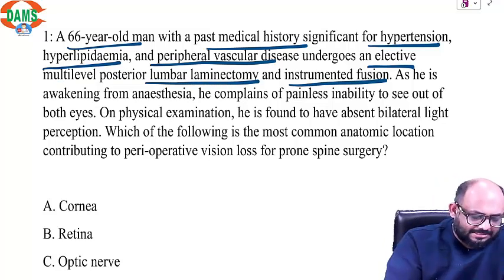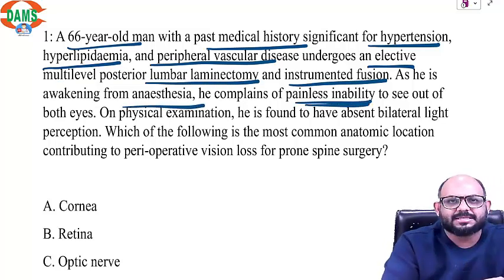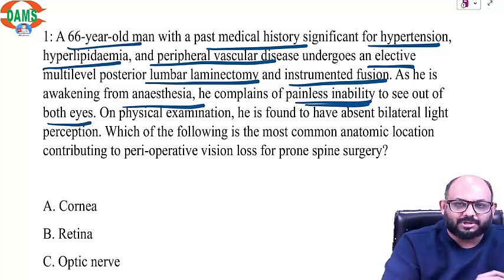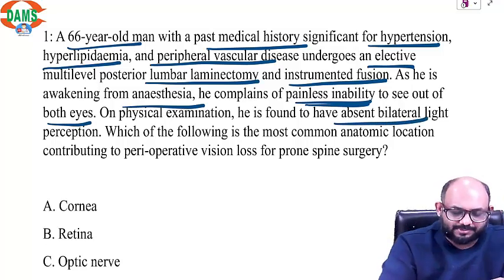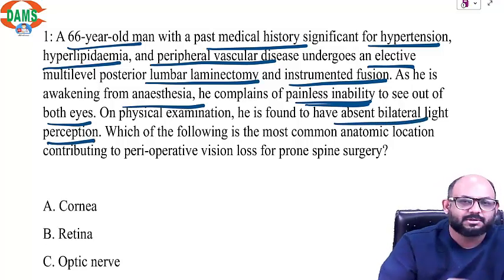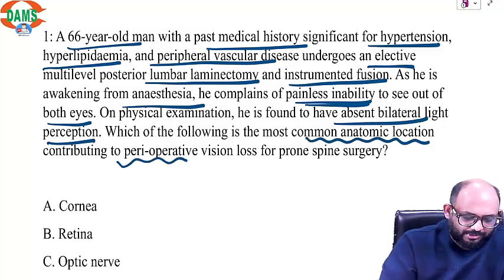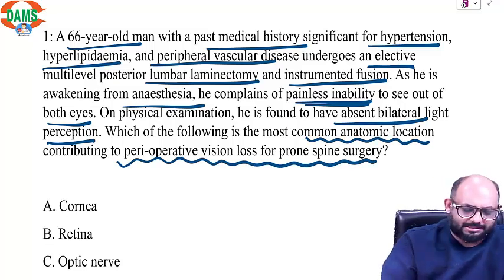As he is awakening from anesthesia, he complains of painless inability to see out of both eyes. On physical examination, he was found to have absent bilateral light perception. Which of the following is the most common anatomical location contributing to perioperative vision loss for prone spinal surgery?